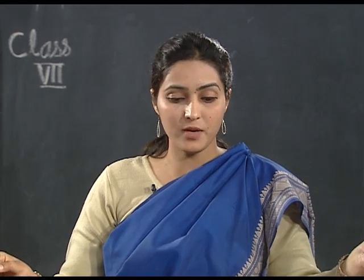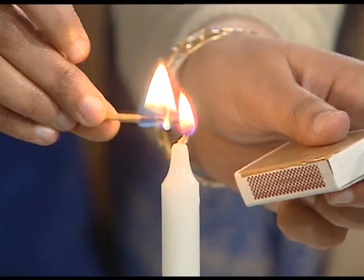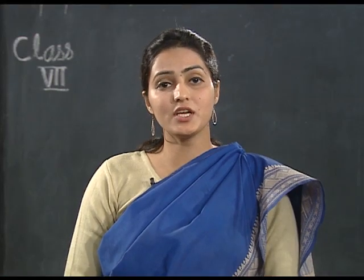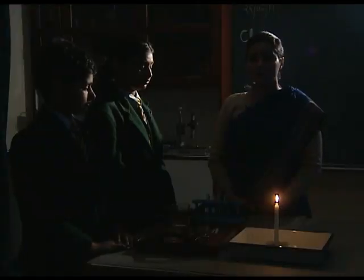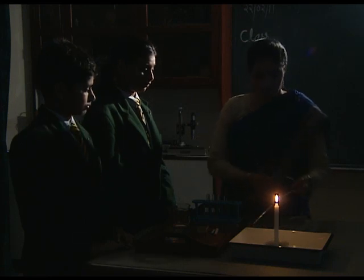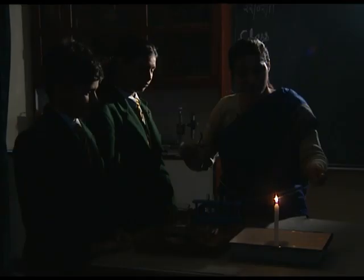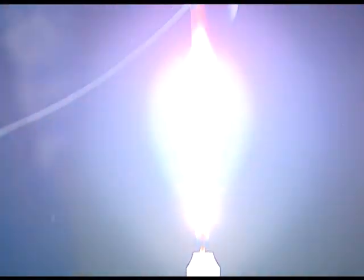Now that we have cleaned this ribbon strip, we need to burn a candle using a matchstick. For this activity we need to switch off all the lights so that the flame is clearly visible. We will hold this magnesium ribbon strip with the help of a tong and introduce it to the flame. We can see that white light is coming out. Yes, when a magnesium ribbon strip burns, it burns with a brilliant white light.